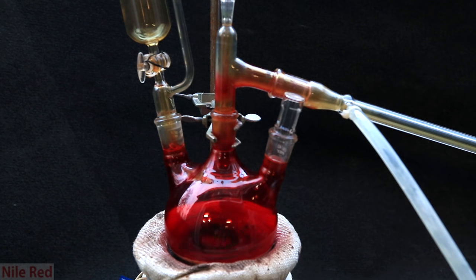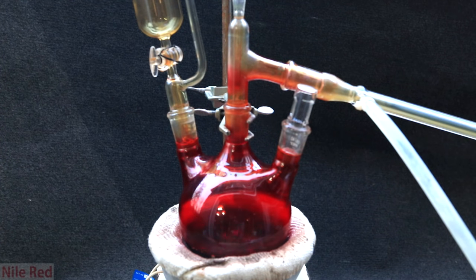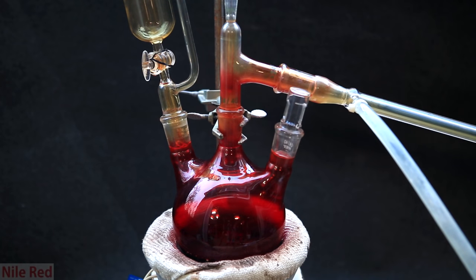Eventually, the stir bar isn't stuck anymore, and it starts to work. As we begin to heat, and more chromal chloride comes off, the flask will get darker and darker until it's pretty much black.